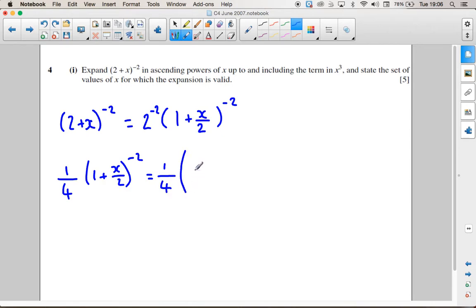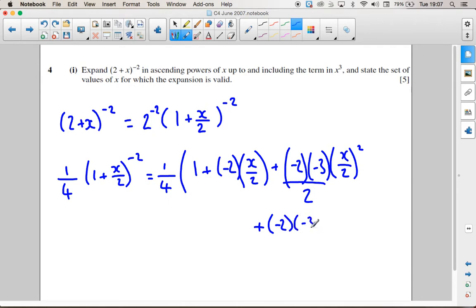So hopefully you remember the formula. This formula is 1 plus nx, where n is this power. So that's 1 plus minus 2 times x. And in this case, x is x over 2, plus minus 2 times minus 3, because it's n times n minus 1, times x squared, all over 2. Plus, and we need to go up to x cubed this time, minus 2 times minus 3 times minus 4, x cubed over 2 times 3.